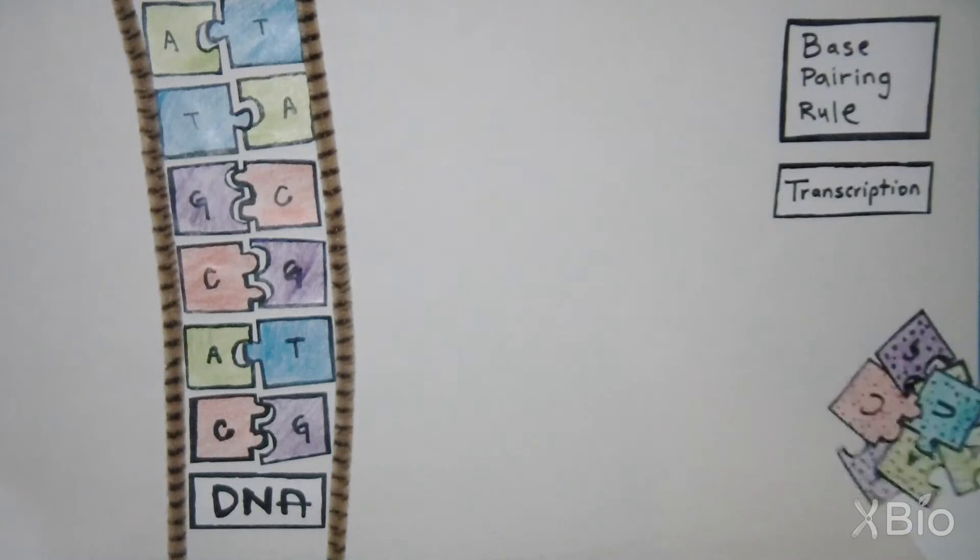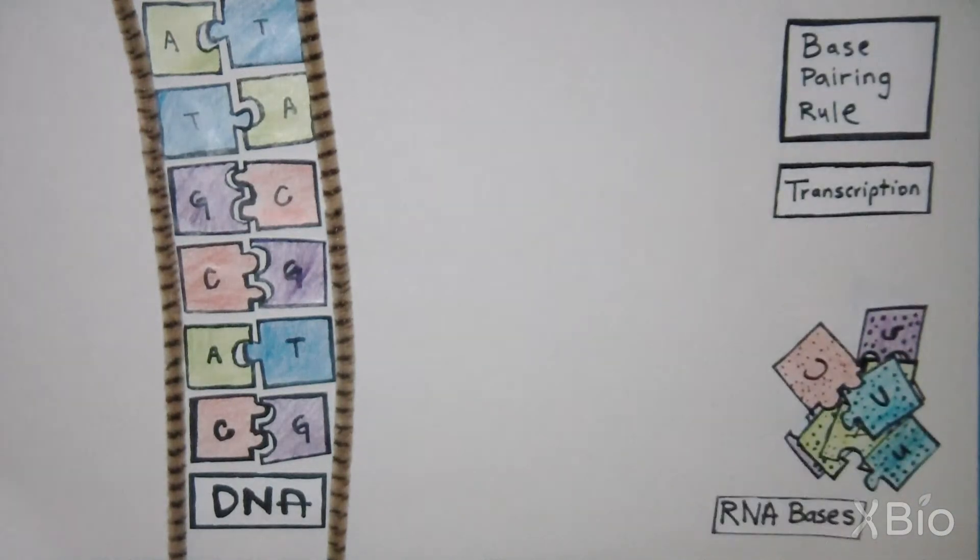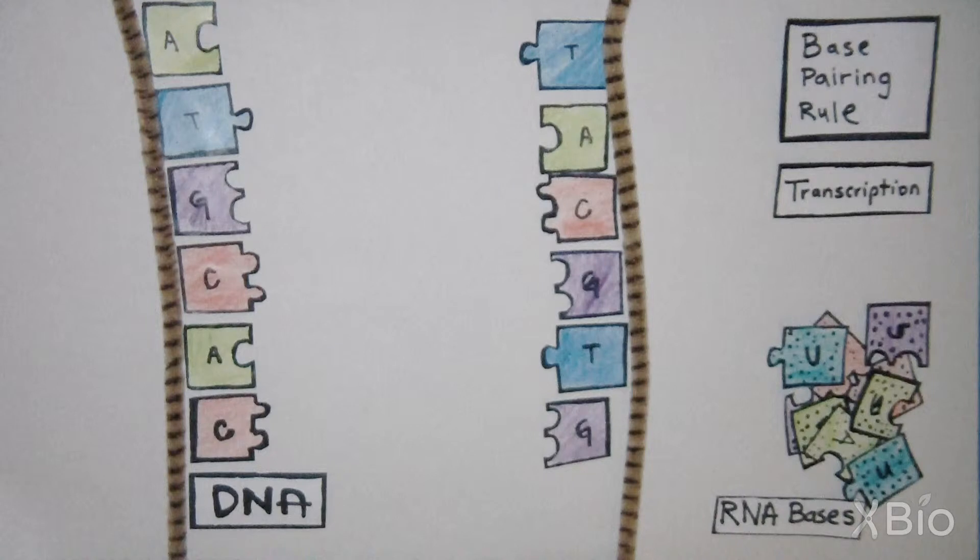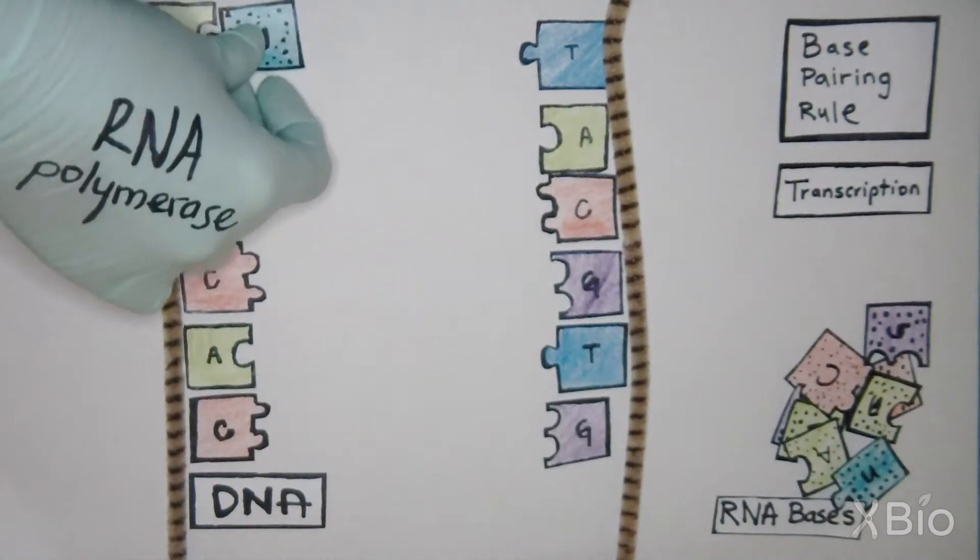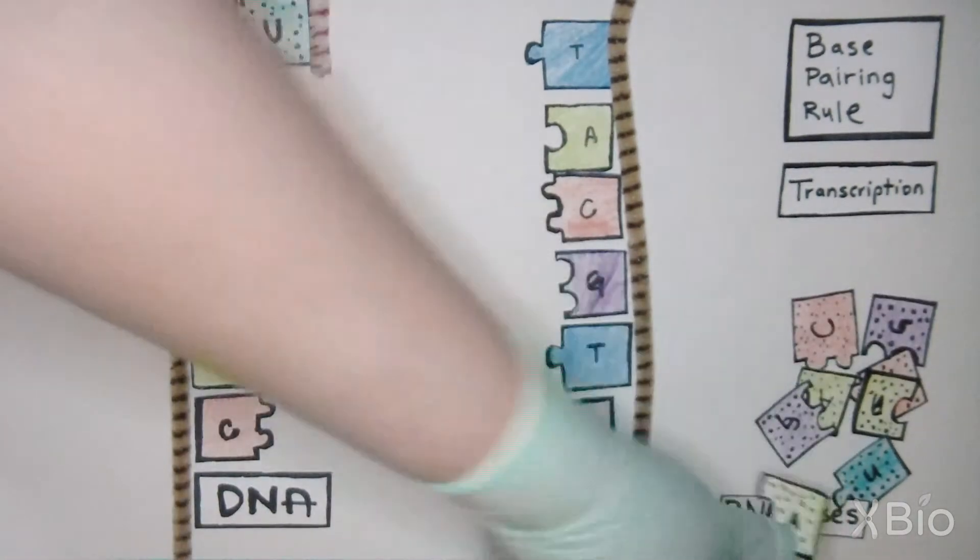The cell uses RNA to make the copy of one strand of a single DNA gene, and transcription is when a machine, known as an enzyme, called RNA polymerase, uses the base pairing rule to make this RNA copy.